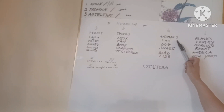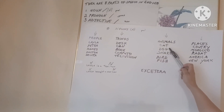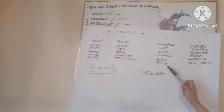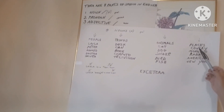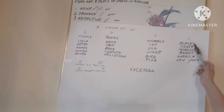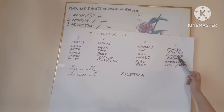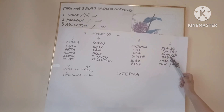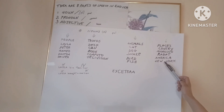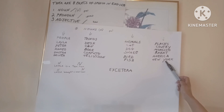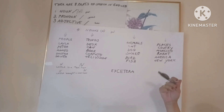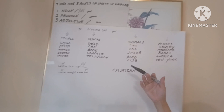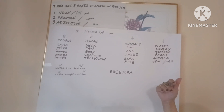Or animals — haywanath — cat, dog, snake, bird, fish, etc. And places — amakin — country, Morocco, Rabat, America, New York, mountain, island, etc.